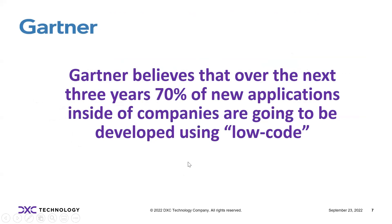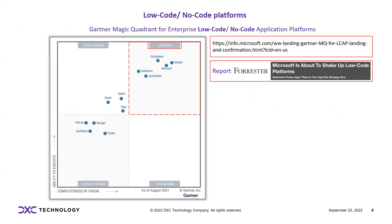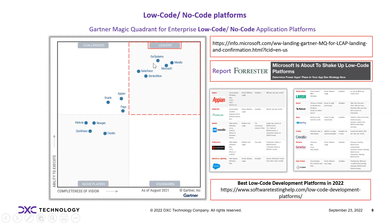This is the Gartner Magic Quadrant with four quadrants: leaders, challengers, niche players, and visionaries. Among the leaders are Mendix, Microsoft, ServiceNow, Salesforce, and OutSystems, to mention a few. There is also a report from Forrester, and a link to the best low-code development platforms in 2022, featuring platforms such as Appian and Mendix.